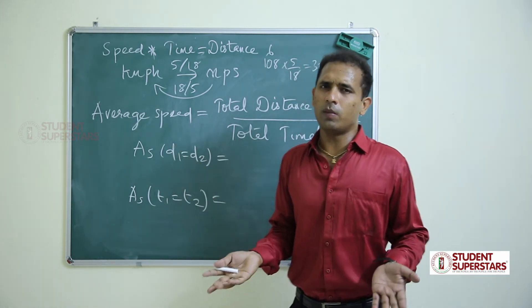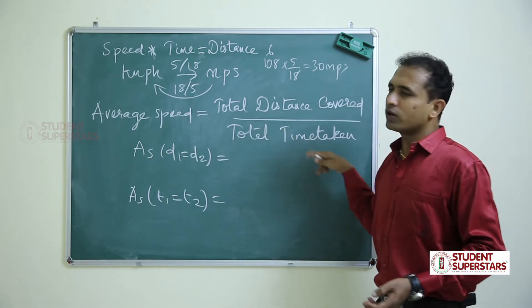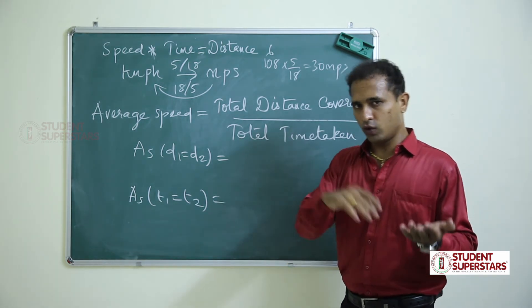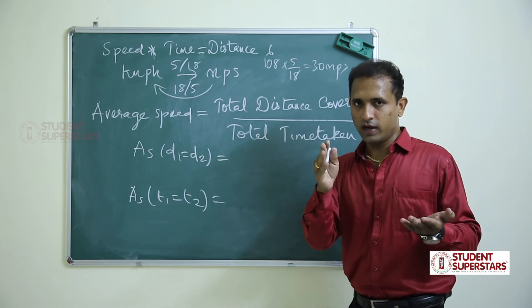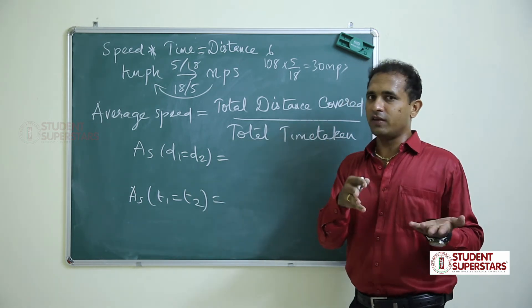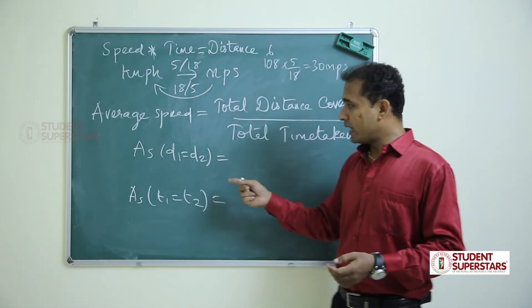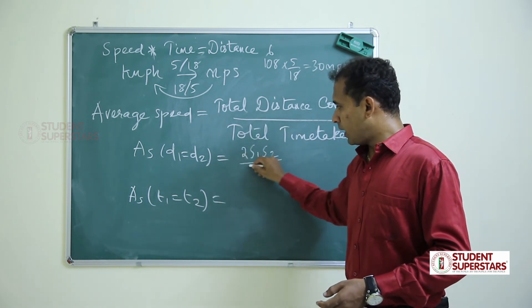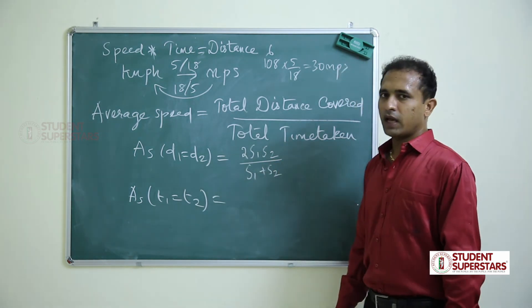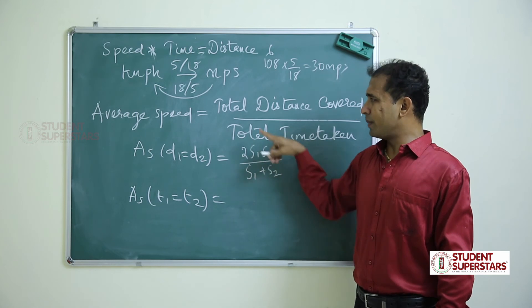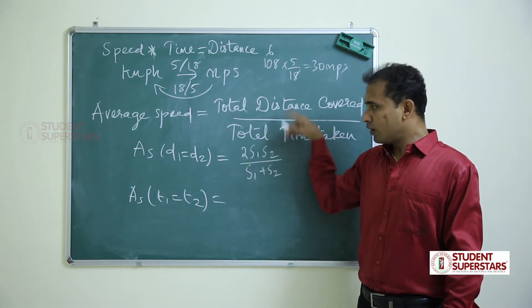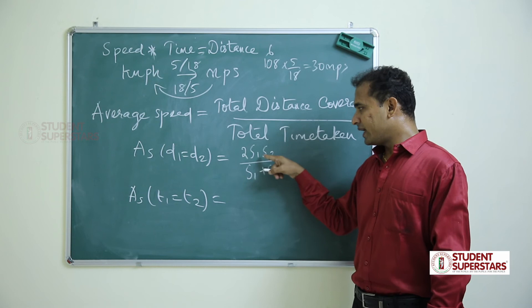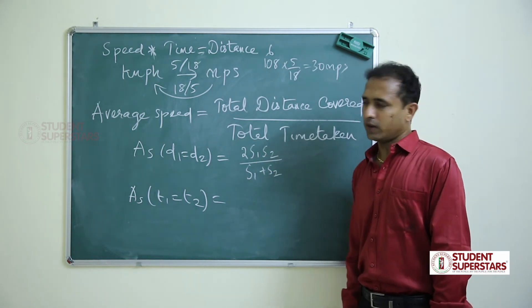Next, average speed. The general formula is total distance divided by total time taken. A special case is when the distance is the same — A to B and B to A. Going from A to B the speed is s1, time is t1; returning from B to A the speed is s2, time is t2. When the distances are the same, average speed = 2 × s1 × s2 ÷ (s1 + s2). We can derive this from total distance 2d divided by t1 + t2.